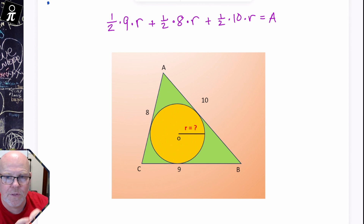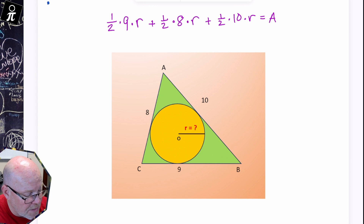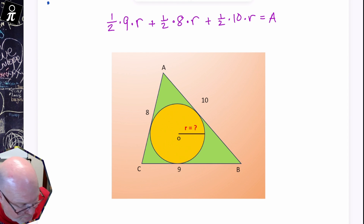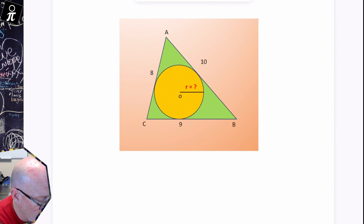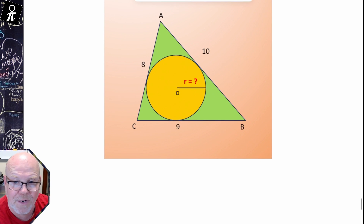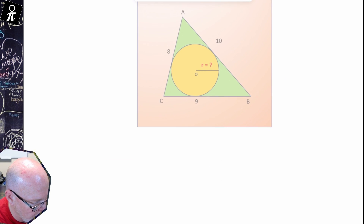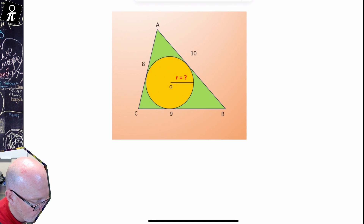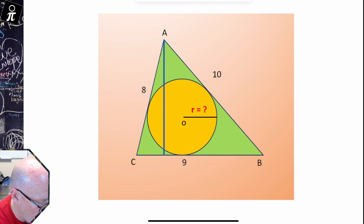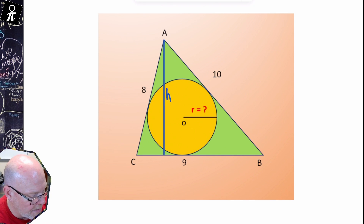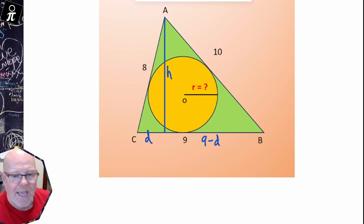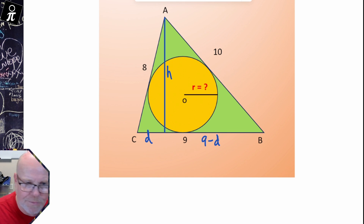The problem is we don't actually know what the area of the triangle is, so we need to use Heron's formula to figure that out — except I never remember Heron's formula, so we're just going to rough it out. We'll drop a line straight down as our height H, and it cuts the base of nine into two sections: D and nine minus D.